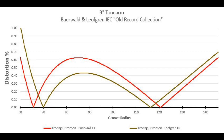Lofgren came up with a formula that placed the null points in different locations that offered an overall average decrease in distortion over the entirety of the playing surface of the record. But as with all things in engineering there is a trade-off: the trade-off Lofgren made for the lower overall distortion was slightly higher distortion at the very end of the record. Personally, I tend to align for Lofgren since all of my records go at least to the middle of the record, but far fewer of them have music at less than 63 millimeter radius, where Baerwald begins to have an advantage over Lofgren.